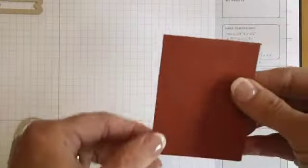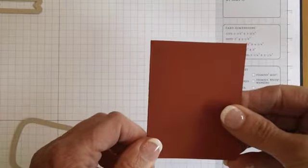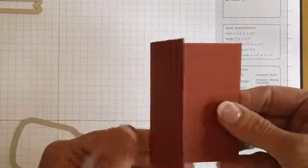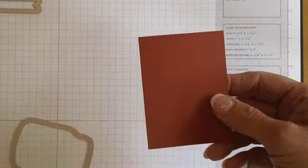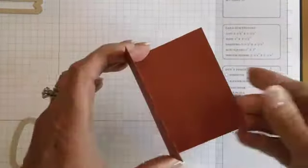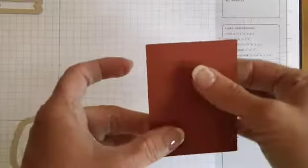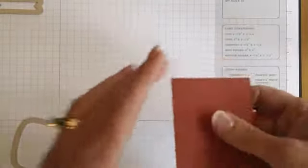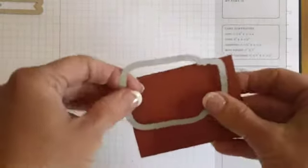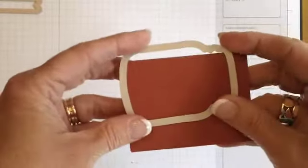Also I noticed something when having the folded piece of paper going through the big shot, this tends to want to pop up and then your framelit falls. So if you'll take some Dotto and just put a tiny little piece inside, that will hold your paper shut and it'll make it much easier to roll this through the big shot.